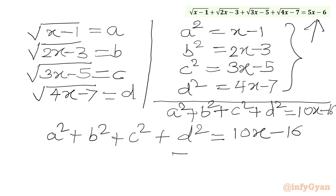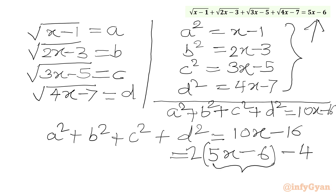Since 5x minus 6 equals a plus b plus c plus d, we can substitute that in. So our equation becomes: a² plus b² plus c² plus d² equals 2 times (a plus b plus c plus d) minus 4.